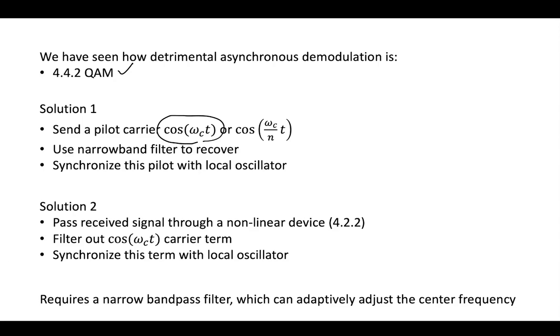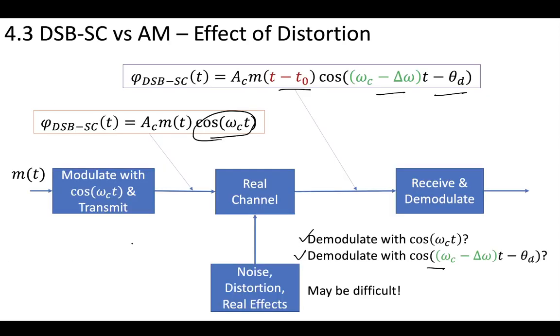So you'd be able to kind of filter out whatever happened and be able to get just this cosine wave using a filter. And you'd be able to, at your receiver, you'd be able to come up with a good cosine wave that matches this.